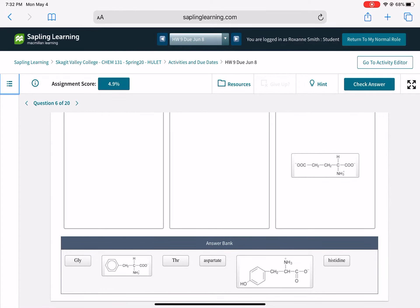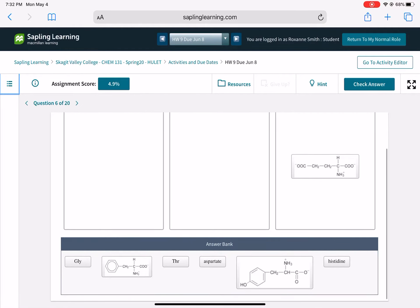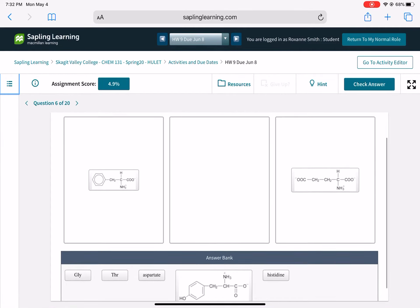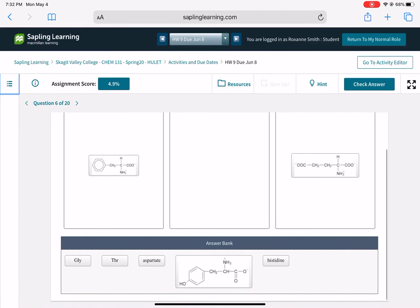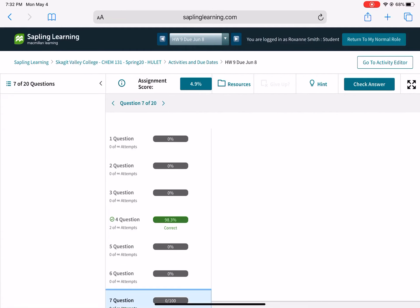And this one over here, I can see its R group. Even though it's drawn on the side, I can see its R group is CH2 and then a benzene ring, so that's neutral. This guy right here looks like a polar amino acid. And then some of them are given to you by their abbreviations, and some of them are given to you by their names, and you're just going to sort them into the boxes based on the structure of the R group.